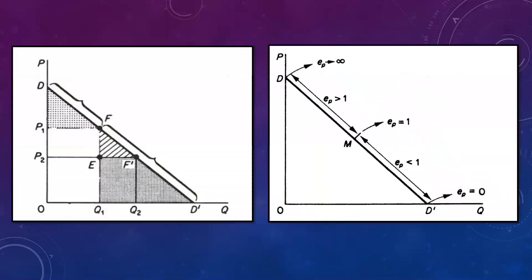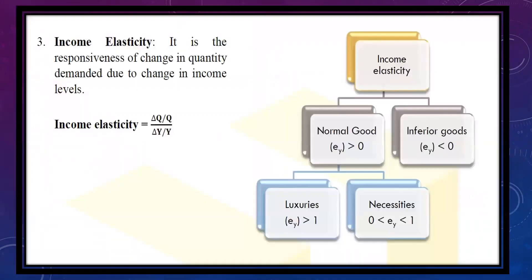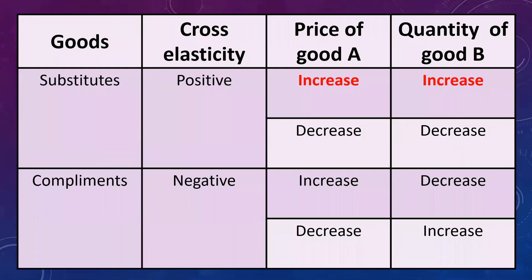Then, increase in demand, decrease in demand, and extension and contraction of demand — have a look at these graphs. Next important concept is elasticities on a linear demand curve — what is the elasticity of demand and how it is calculated. Then income elasticity for different goods: normal good, inferior good, luxuries, and necessities. Next, cross elasticity in the case of substitutes and complements — the change in price and change in quantity. These are important tables you should review today before the exam.